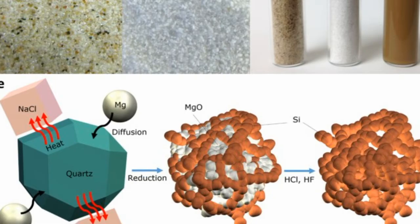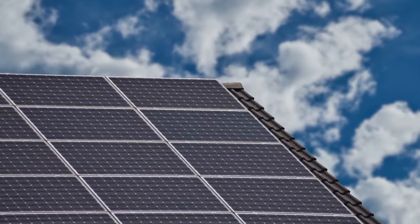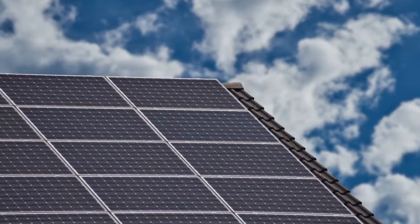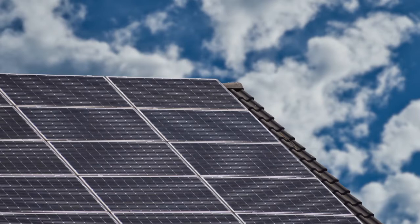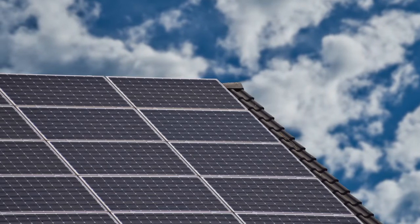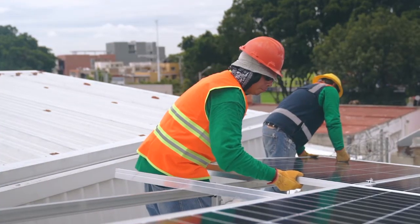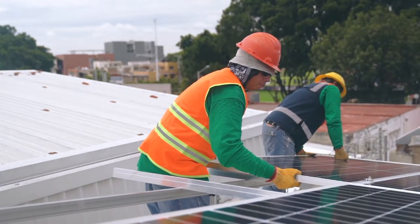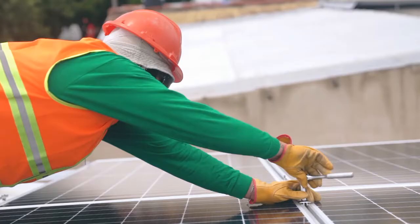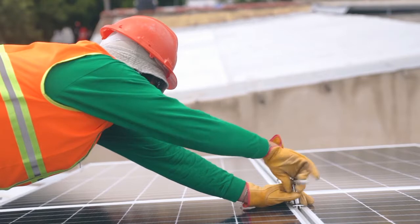A solar cell, also known as a photovoltaic cell or PV cell, is defined as an electrical device that converts light energy into electrical energy through the photovoltaic effect. A solar cell is basically a PN junction diode. Solar cells are formed by a photoelectric cell, defined as a device whose electrical characteristics such as voltage or resistance vary when exposed to light.